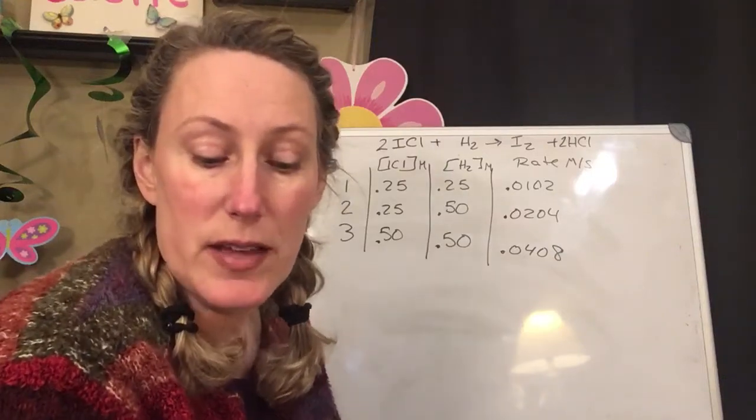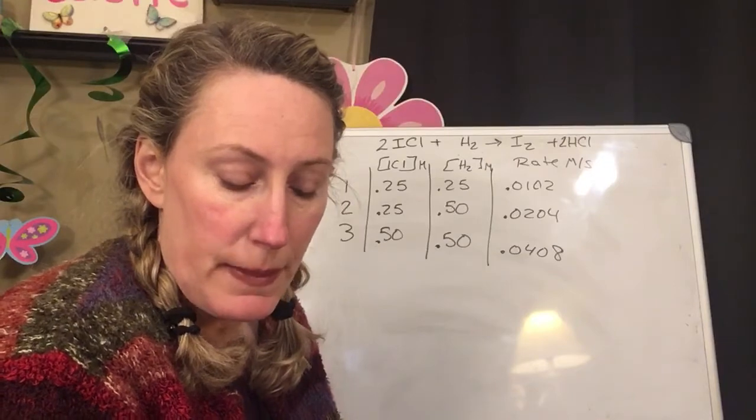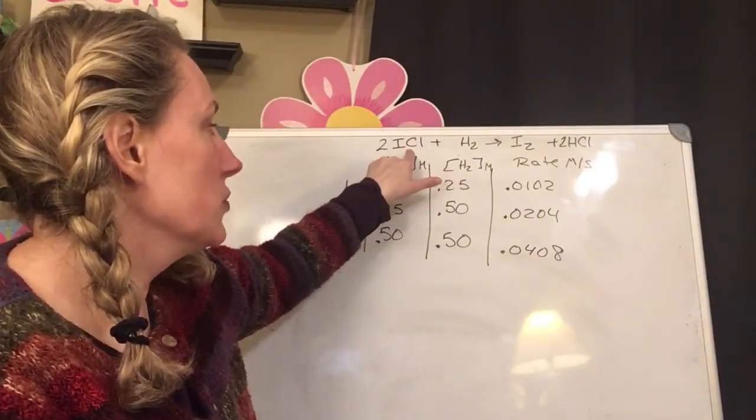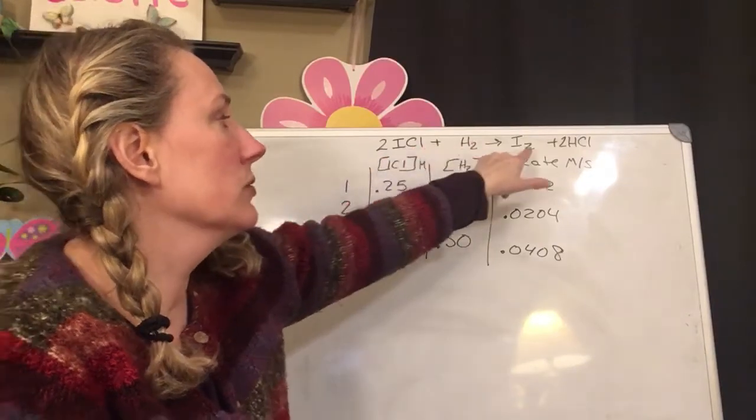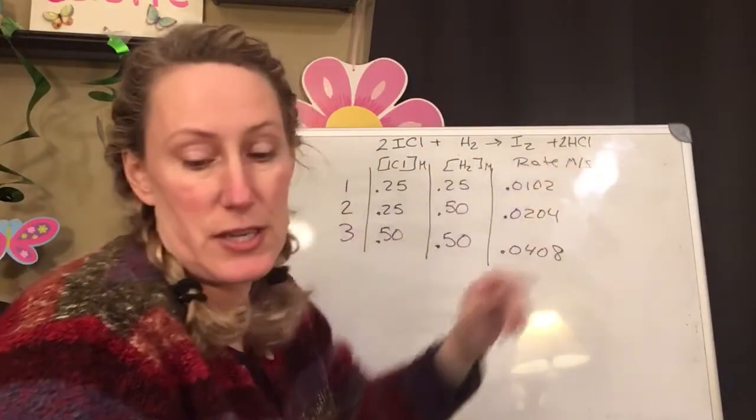Okay, now I'm doing example 14.2 on page 466. A chemist runs this experiment: 2ICl plus H2 turns into I2 plus 2HCl.